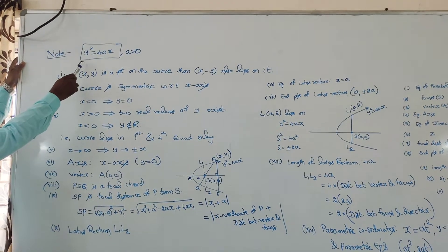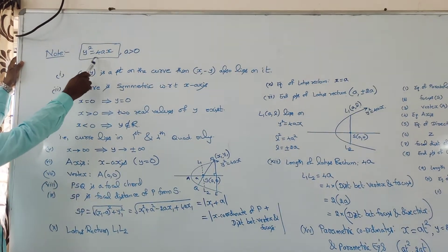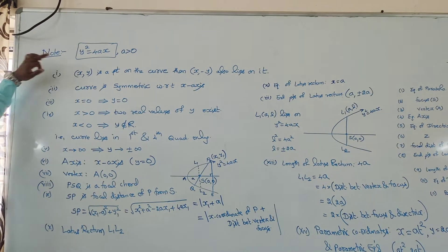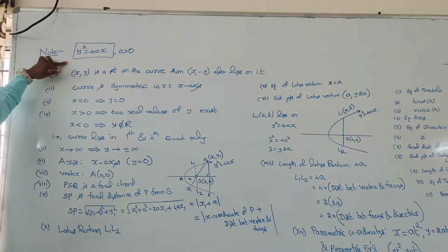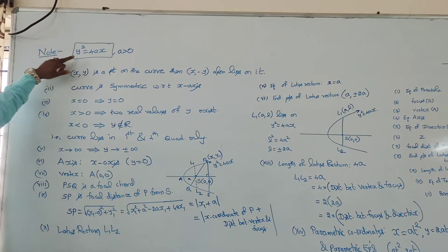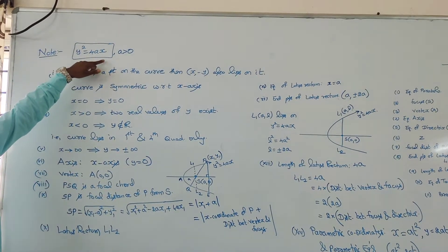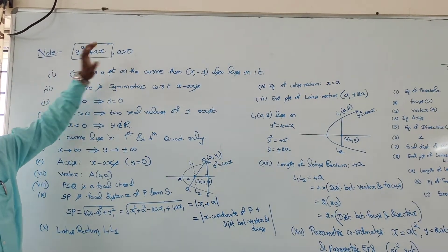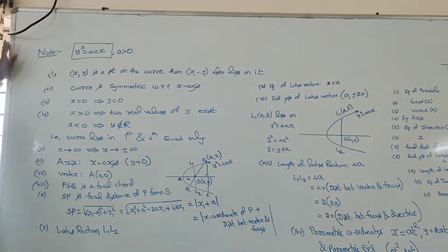Description of the parabola y² = 4x. The points relating to the curve y² = 4x are usually where A is greater than 0.